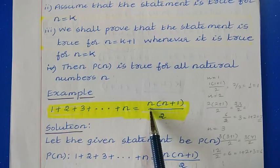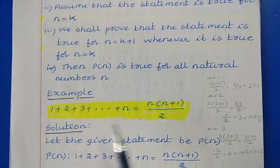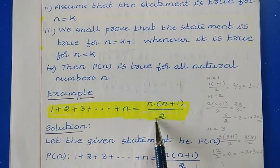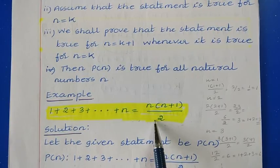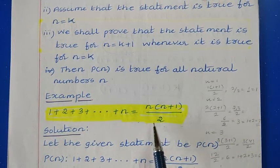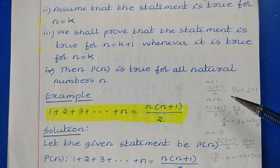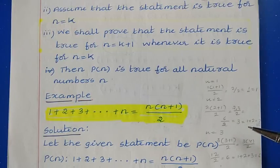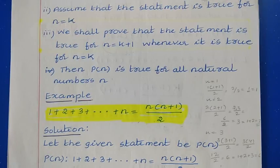Now if you want to verify whether this mathematical statement is a true statement or a false statement, one method you can use is to check this statement for all the values of n. Since n is a set of natural numbers, you begin with n equal to 1, n equal to 2, n equal to 3, and so on. If for all the values of n you get the answer true, then we can say that it is a true statement.